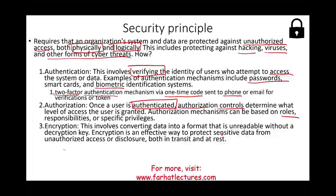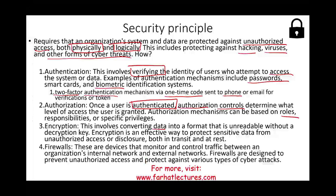We could also use encryption, which involves converting data into a format that is unreadable. Even if you intercept this data, you cannot read it because you need a decryption key. Encryption effectively protects sensitive data — for example, an encrypted email cannot be read if intercepted, because a separate key is required to open it. This protects against unauthorized access or disclosure both in transit and at rest. Additionally, firewalls are devices that monitor and control traffic between an organization's internal and external networks, designed to prevent unauthorized access and protect against cyber attacks.